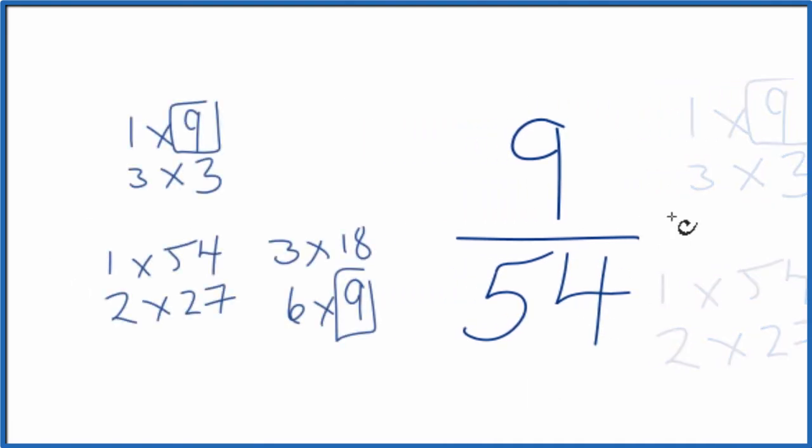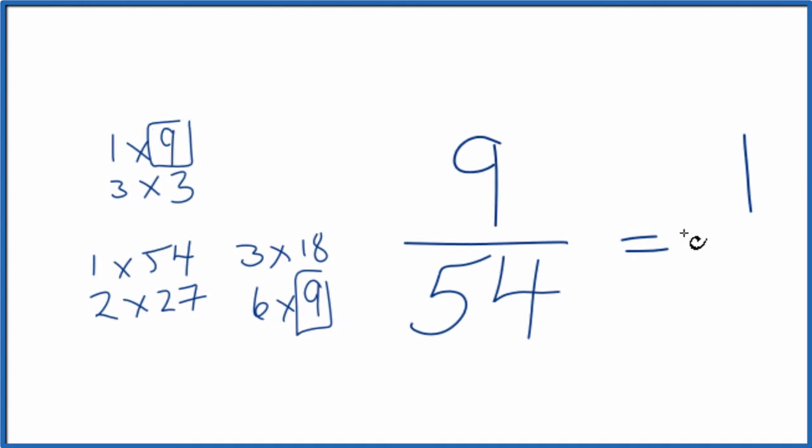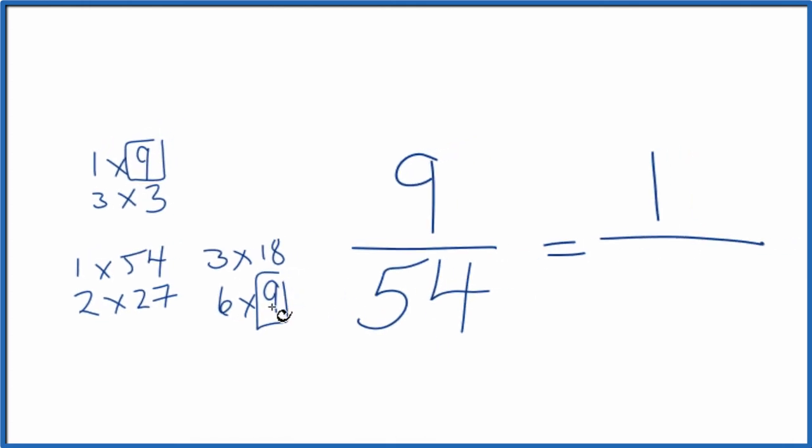Let's move these over here. So 9 divided by 9 gives us 1, and then 54 divided by 9 gives us 6.